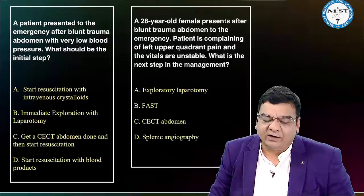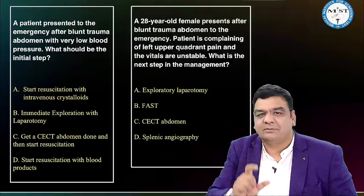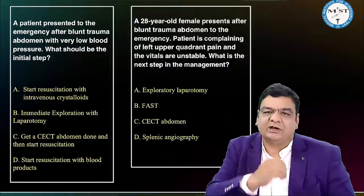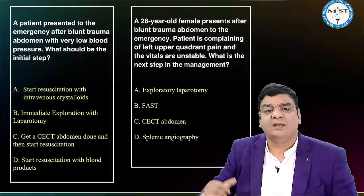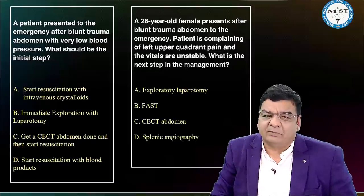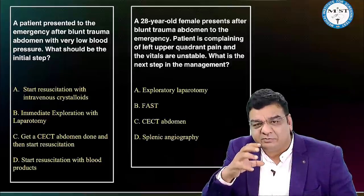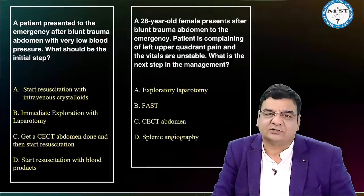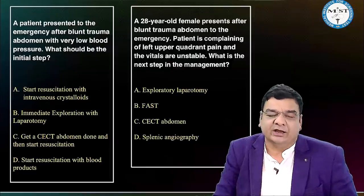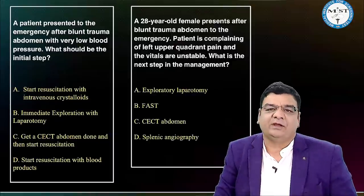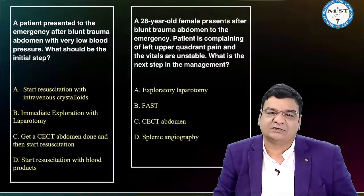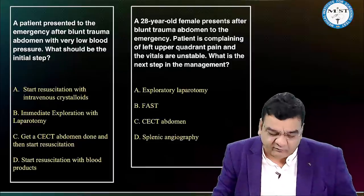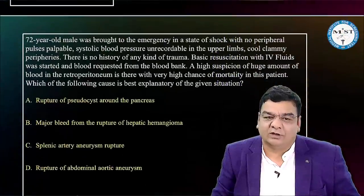In an unstable patient, start basic resuscitation with IV crystalloids — colloids are never given initially in hypovolemic shock. Then pump in blood and blood products if needed. While resuscitating, ABC management continues in the emergency. If FAST is available, do it quickly to locate the exact injury. Then take the patient for a laparotomy via a midline incision in blunt trauma abdomen when unstable.